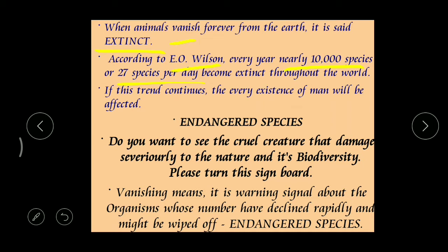So what does extinct mean? Extinct means the plants and animal species which were completely disappeared from the face of the planet - such animals or plants can be called extinct. The next topic is endangered species.